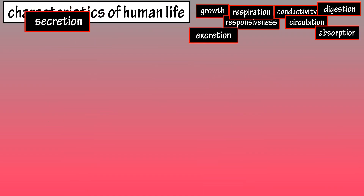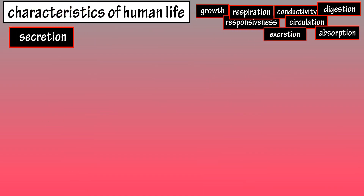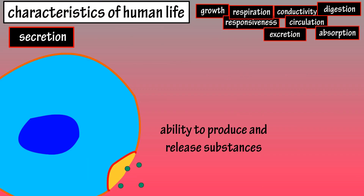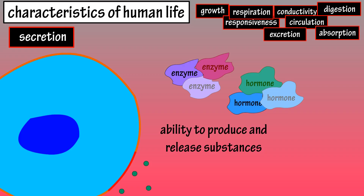Secretion is also a characteristic of life, meaning the ability to produce and release important substances that have important functions in the body — for instance, enzymes, hormones, and digestive juices. Many glands in the body secrete certain substances that have specific jobs to do.